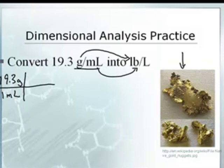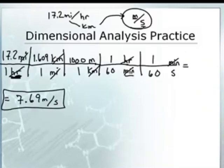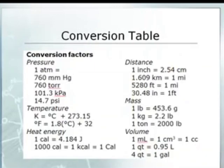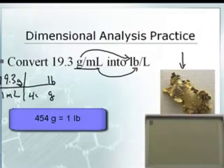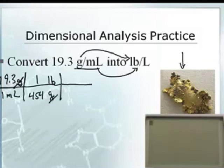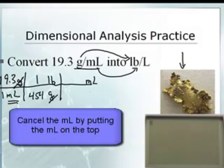19.3 grams per one milliliter. Let's do the mass first. I got a G on the top, so I put a G on the bottom. I'm going to go pound. We've got to look at our conversion table. Pounds to grams, that's that 454 number. There's 454 grams in one pound. The G's cancel. We got pounds per milliliter. We don't want pounds per milliliter, we want pounds per liter. The milliliter's on the bottom, so the rule goes on the top. There's a thousand, 1,000 milliliters in one liter, and the milliliters cancel.